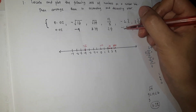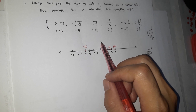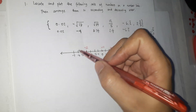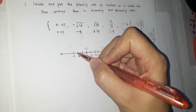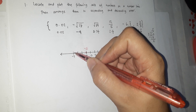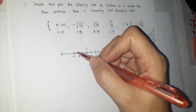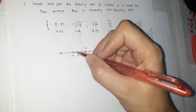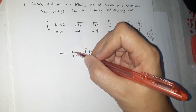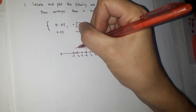For negative 6.2 bar — it's negative, so we go to the left. It falls before negative 6. Dividing the space between negative 6 and negative 7 into 10 parts, 6.2 bar is at the 2nd mark — but since it has a repeating decimal, it goes slightly after the 2nd mark.